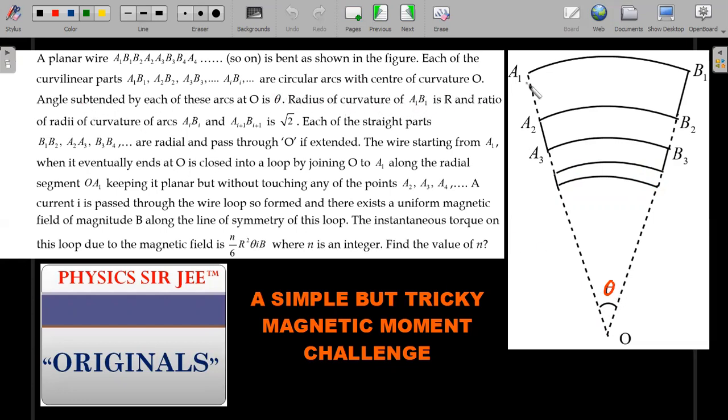All circular arcs have the same center of curvature O and subtend an angle θ at that center. Radius of curvature A₁B₁ is r, and the ratio of radii of consecutive arcs AᵢBᵢ and Aᵢ₊₁Bᵢ₊₁ decreases by a factor of √2. Each of the straight parts B₁B₂, A₂A₃, B₃B₄—the alternating ones—are radial and pass through O if extended.